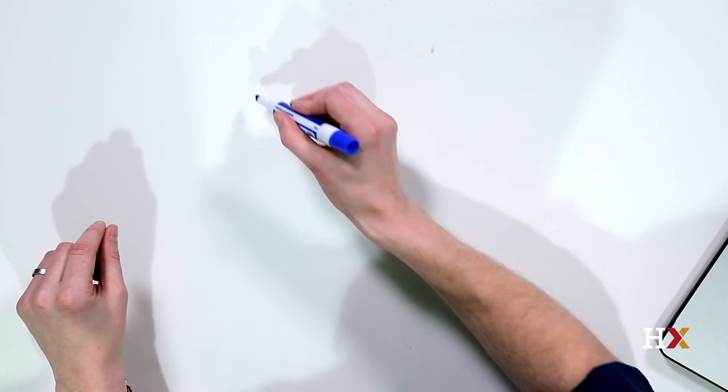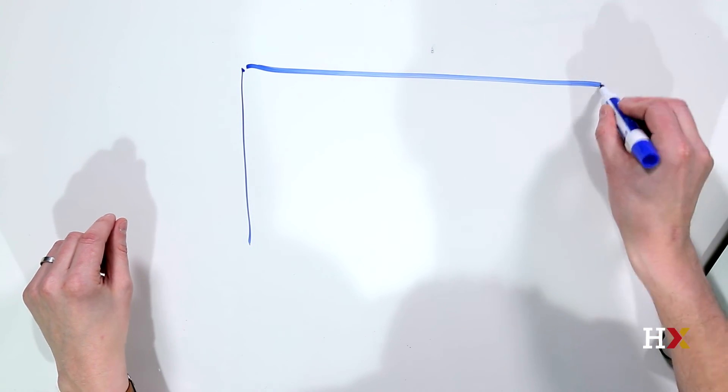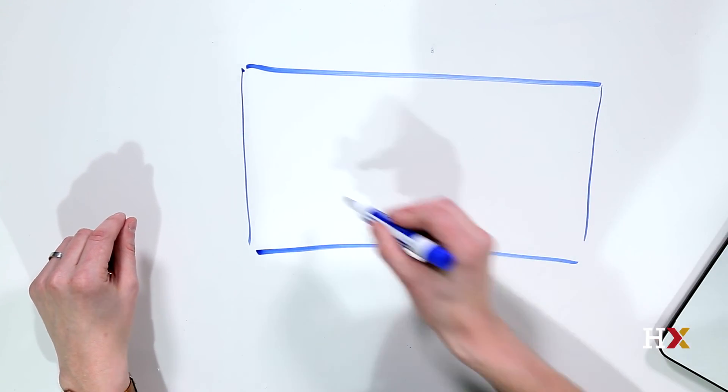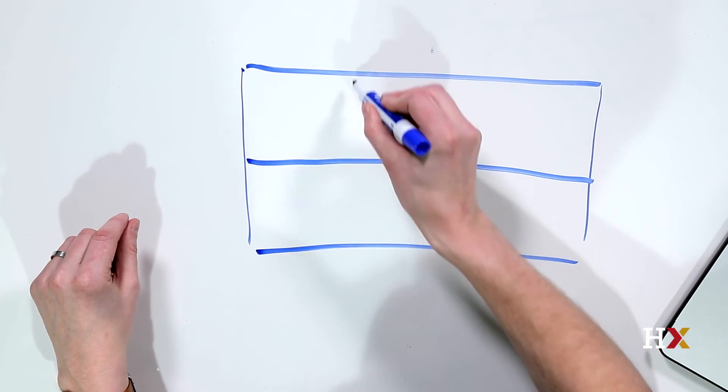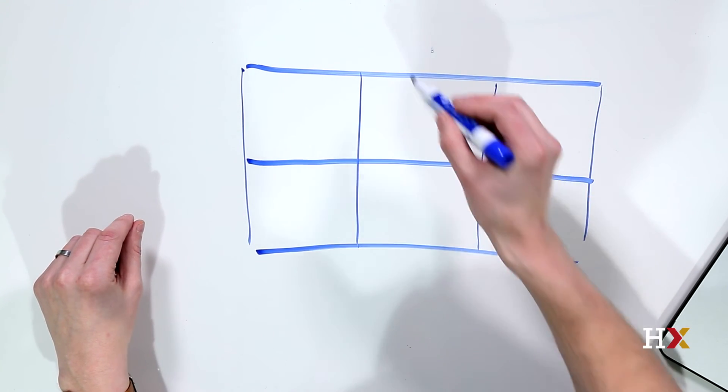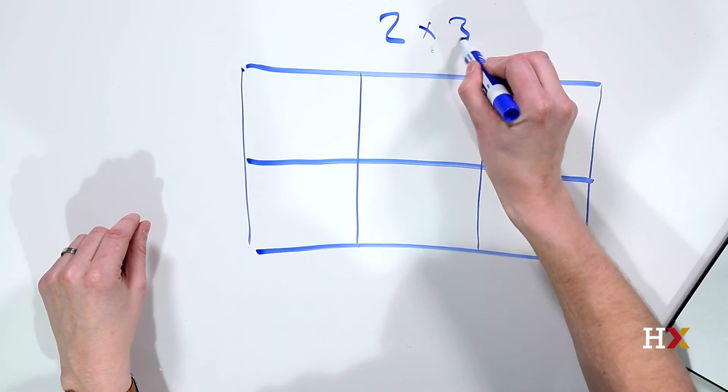Let's see how this works. Let's look at a 2 by 3 subplot. In this case, we have two rows and three columns. So this would be a 2 by 3 subplot.